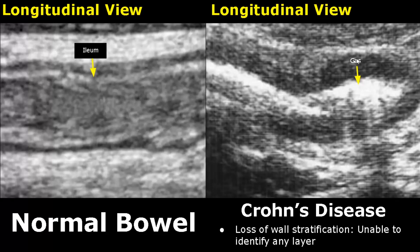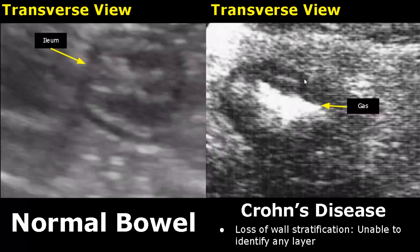Here is a transverse view showing loss of wall stratification. No layers are identified, and there is gas in the lumen of the ileum.